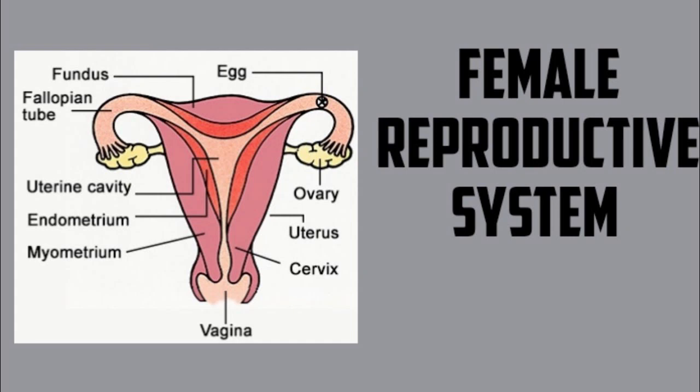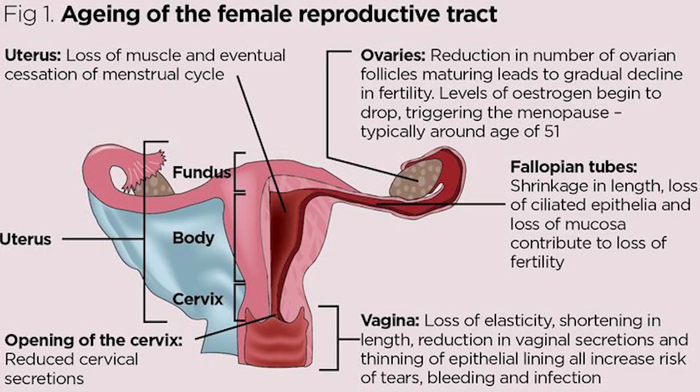This is the anatomy of the female reproductive system. The female reproductive system is made up of the internal and external sex organs that function in the reproduction of new offspring.